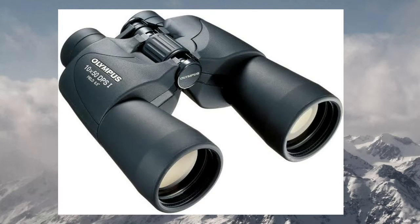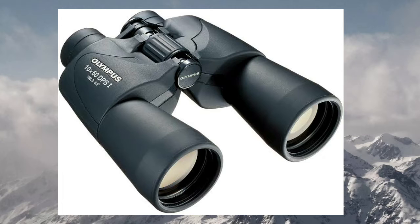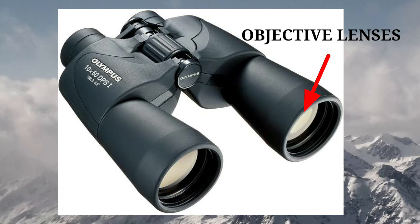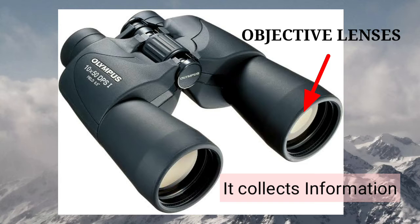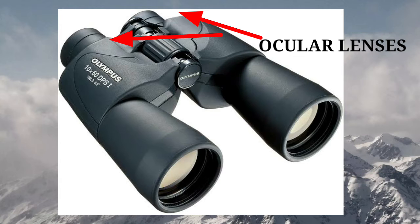As we look at the front of the binocular, you have the objective lens, and that is the lens that collects information, which then makes its way to the ocular lens.